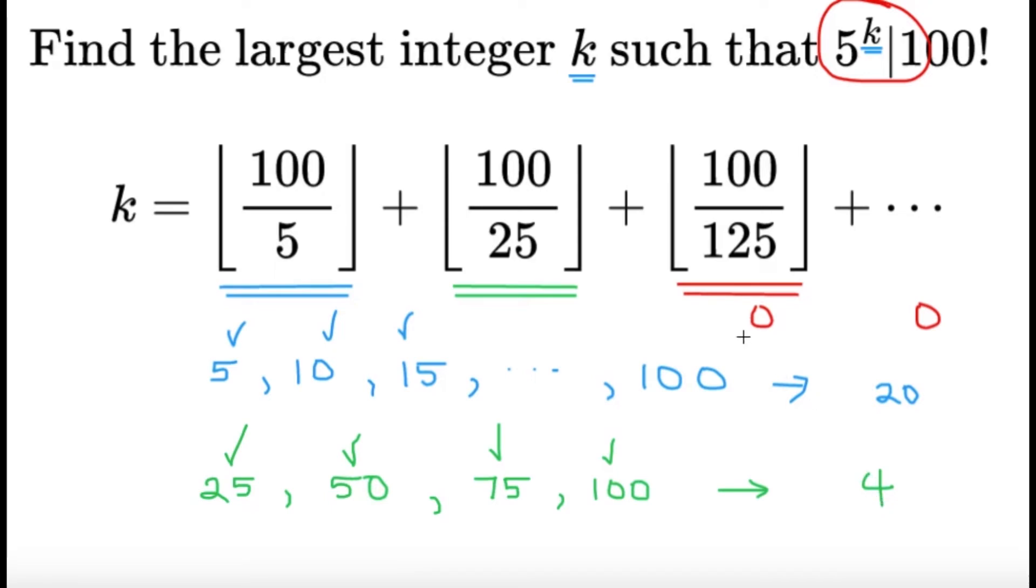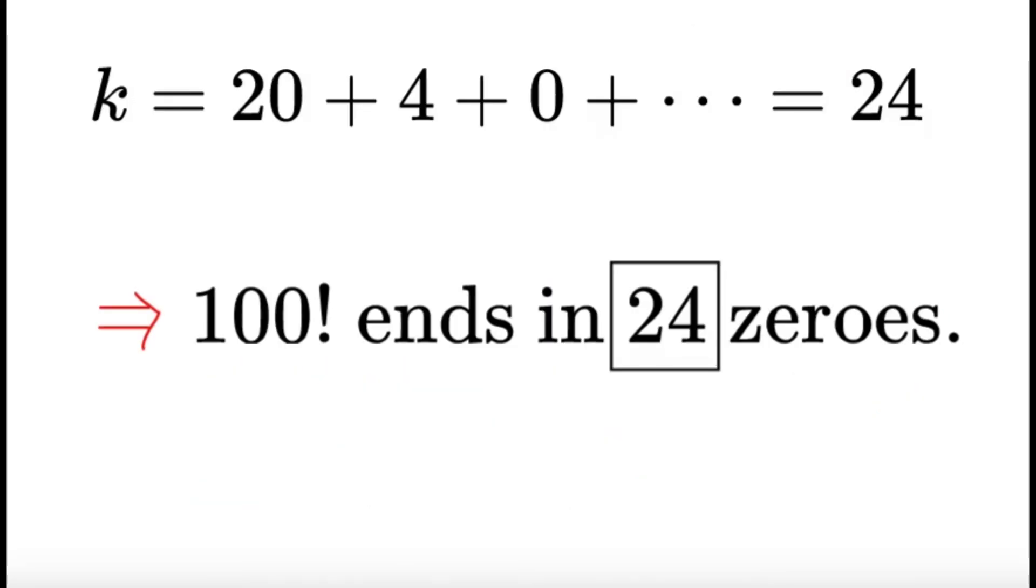So, we can keep on going, counting the multiples of 125, 625, and so on. But in this case, there are none. So, we can just simply add them up. k is equal to 20 plus 4 plus just a bunch of zeros. Well, at least we know that everything after this part is just going to be 0. So, it's just 20 plus 4, which is going to be 24.